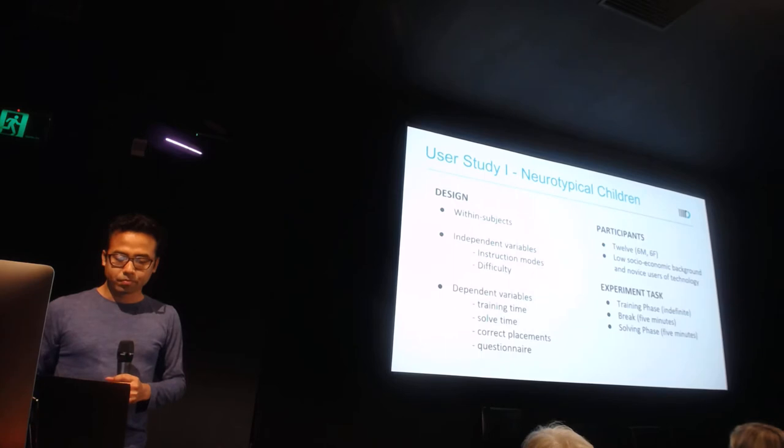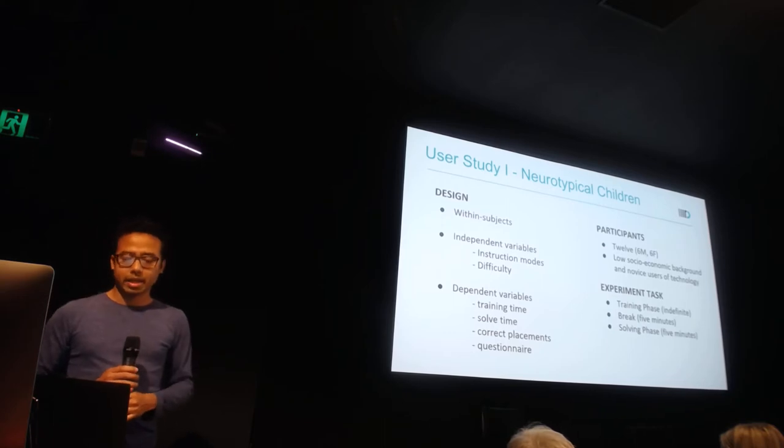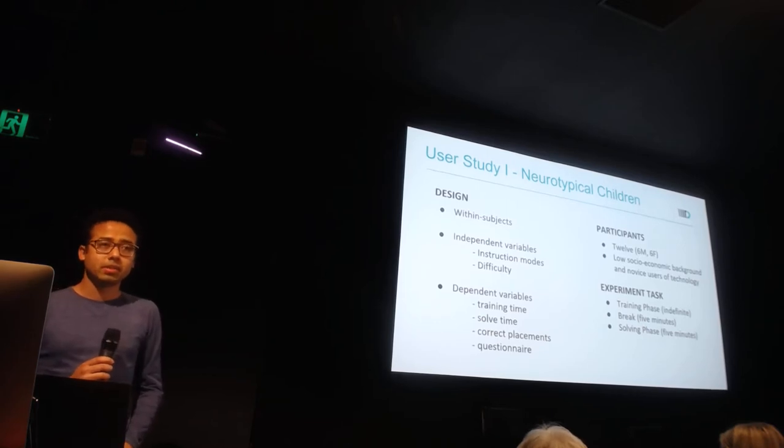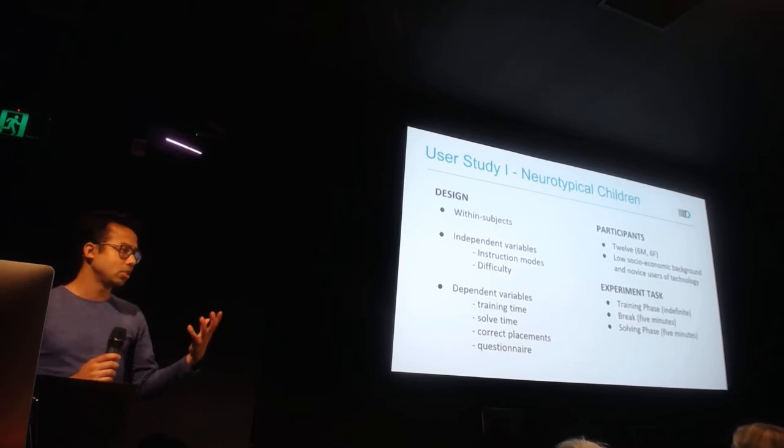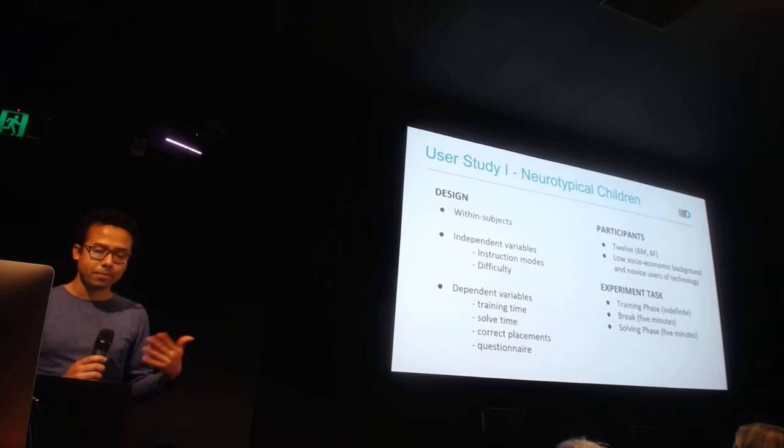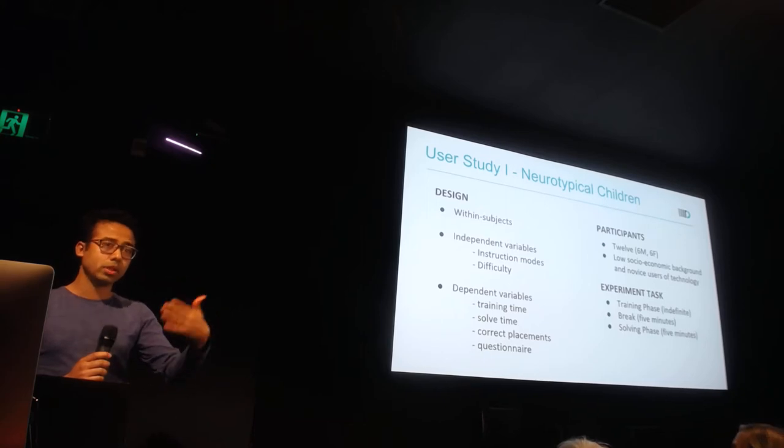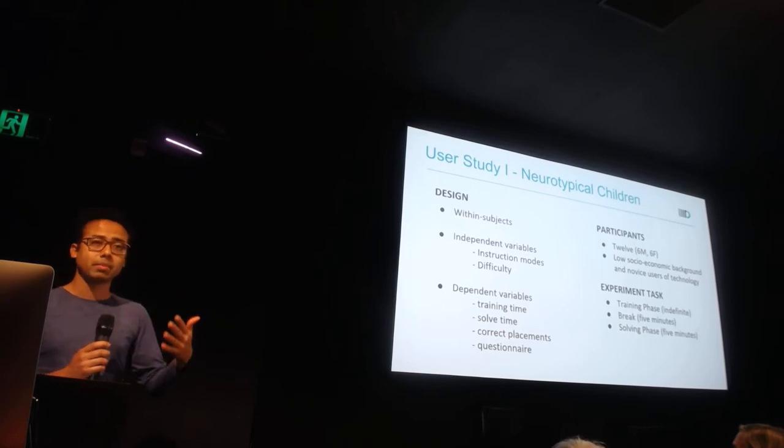The first study was with children. There were 12 children, and we had two independent variables: instruction mode and difficulty. We had two different levels of difficulty—easy and hard. In the easy task we had seven pieces of the puzzle, and in the hard one we had nine pieces. They had to do it with instructions, then after a five-minute break, solve the puzzle by themselves without instructions to see how much they learned.